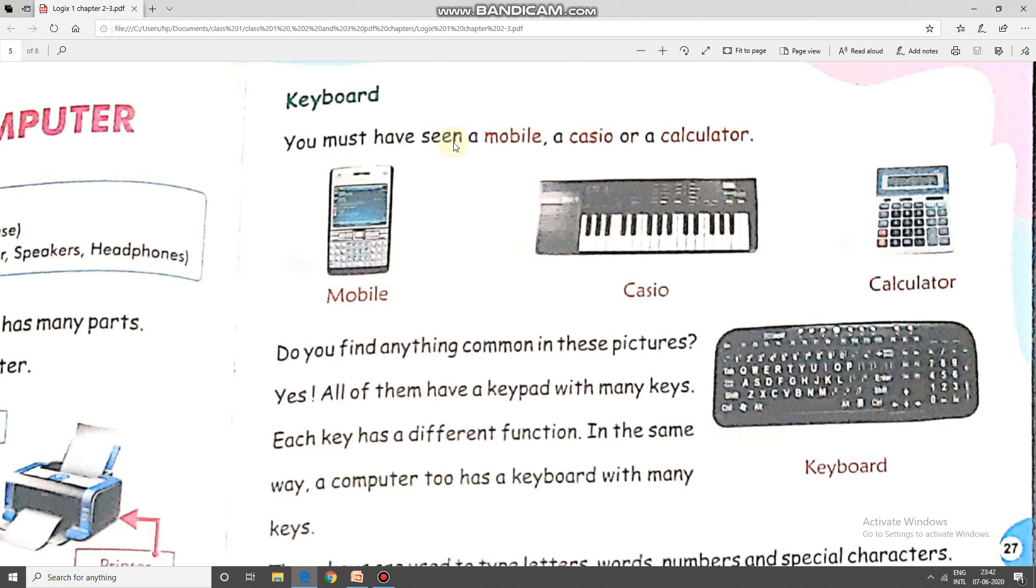And why? Because each key serves a different purpose. With the help of mobile keys, we are able to type text, we are able to dial calls. With the help of the keys of the Casio, we are able to play songs, rhymes. And with the help of the keys of a calculator, we are able to calculate.